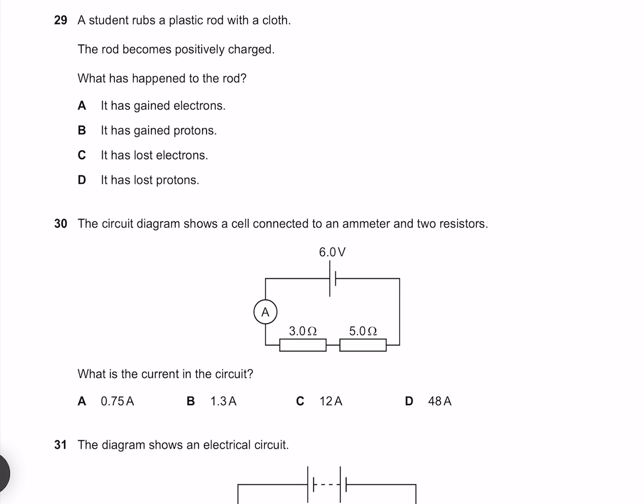A student rubs a plastic rod with a cloth. The rod becomes positively charged. What has happened to the rod? Our agents of charge are our electrons, and not our protons, meaning that our electrons move and our protons don't. Because electrons are negatively charged, gaining electrons will make our rod negative, whereas losing electrons will make our rod positive, which is what we're looking for. So our answer must be C.